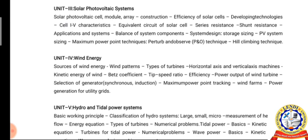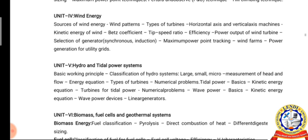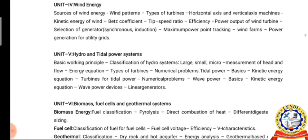Unit 3: Solar Photovoltaic Systems. Unit 3 gives complete knowledge on solar photovoltaic systems, also known as solar PV systems, which comprises the balance of system. This unit deals with IV characteristics, system design, and different MPPT techniques — maximum power point techniques.